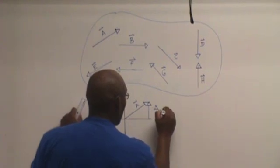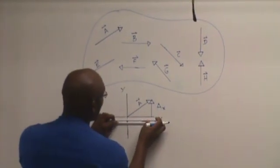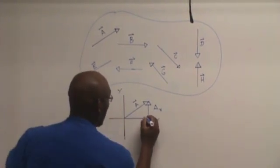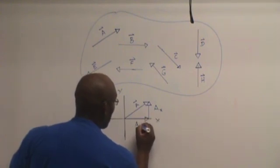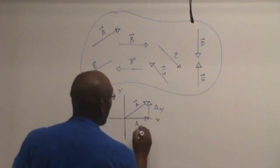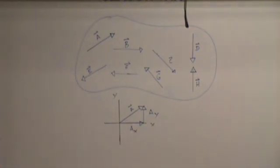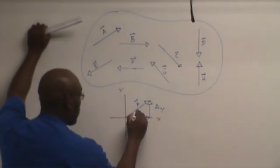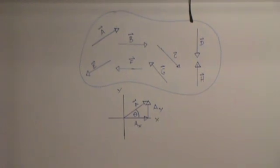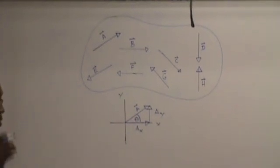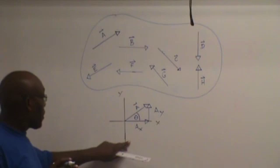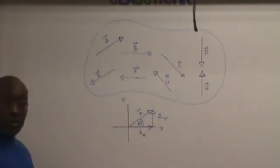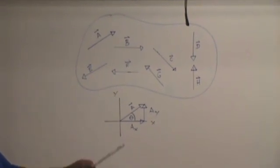We call that A subscript X, along parallel to the X axis, and we call this A subscript Y. We also need to know this angle. Let's call that angle theta and it represents the direction of vector A. So how do we go about finding the components of this vector?